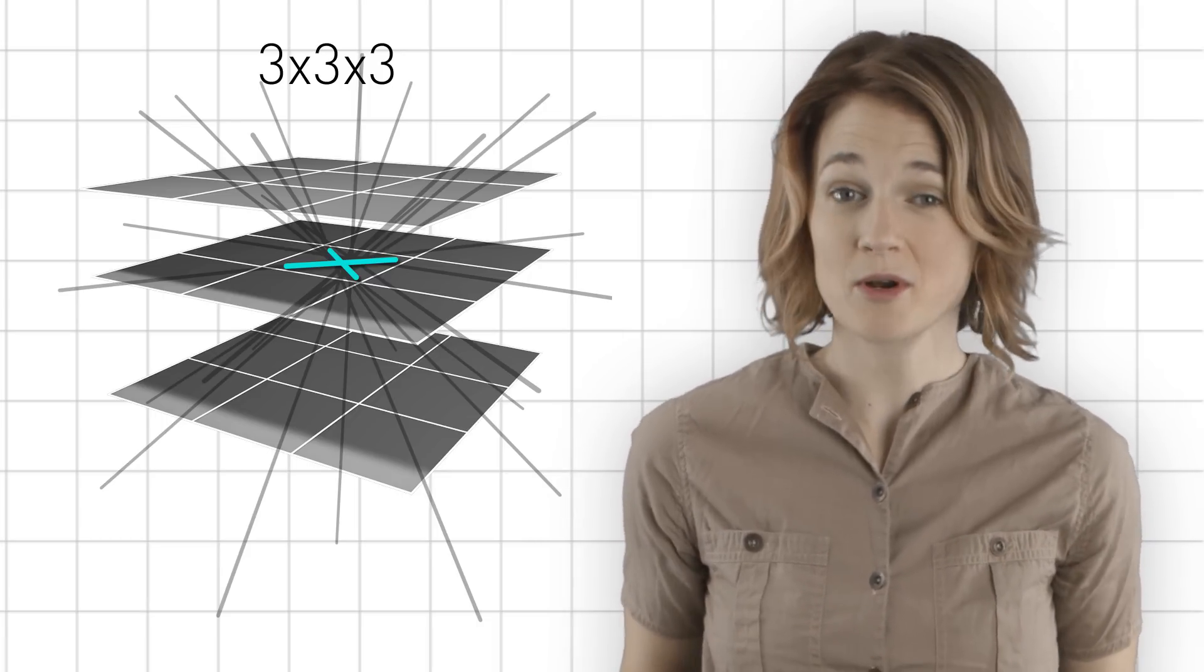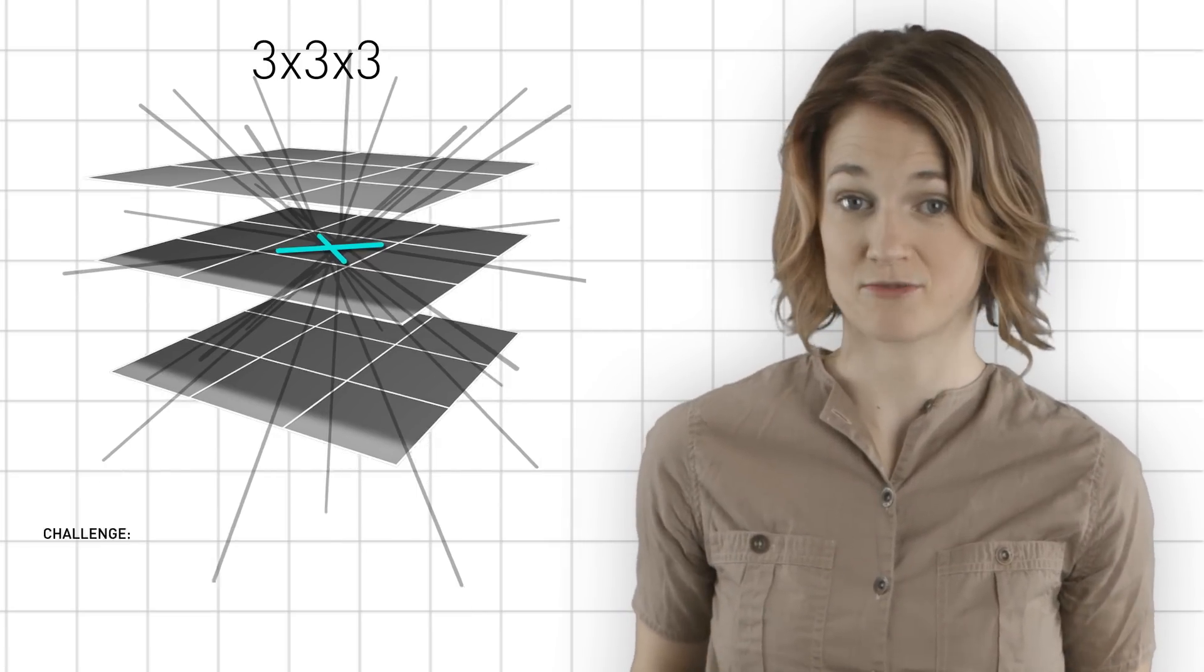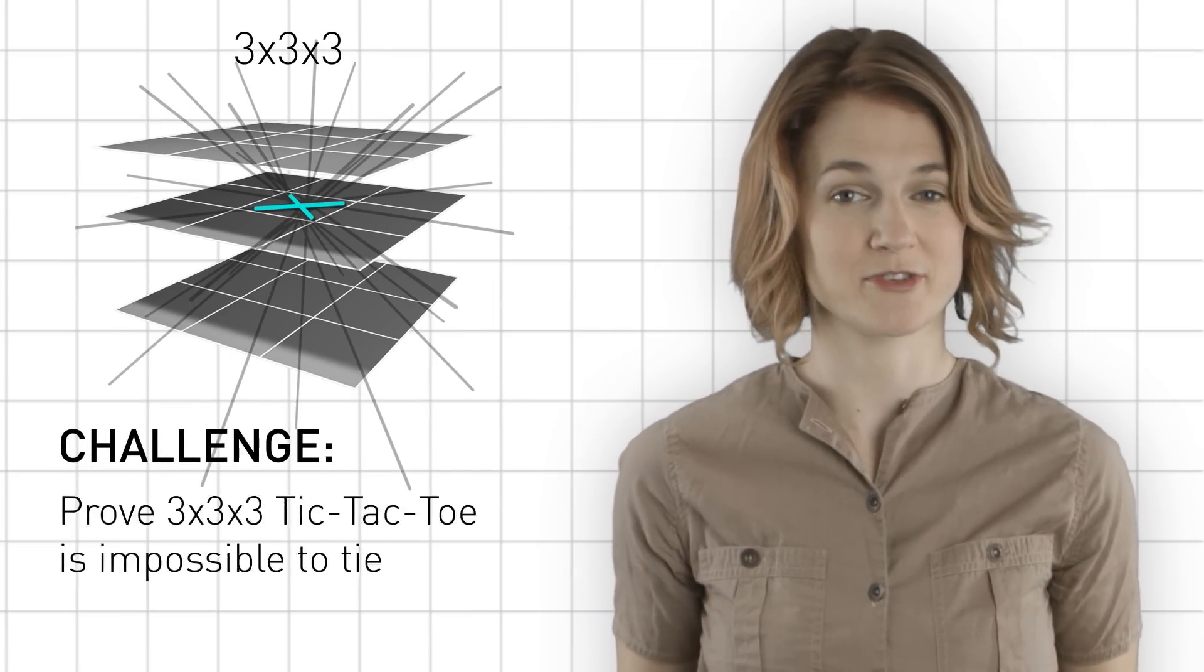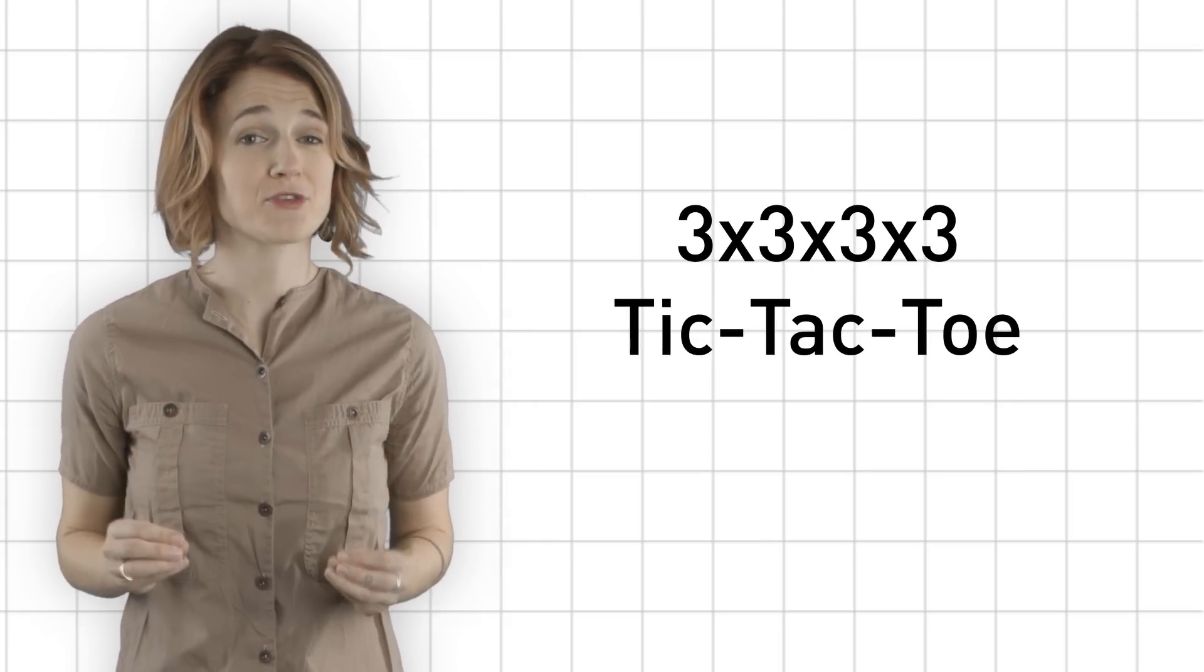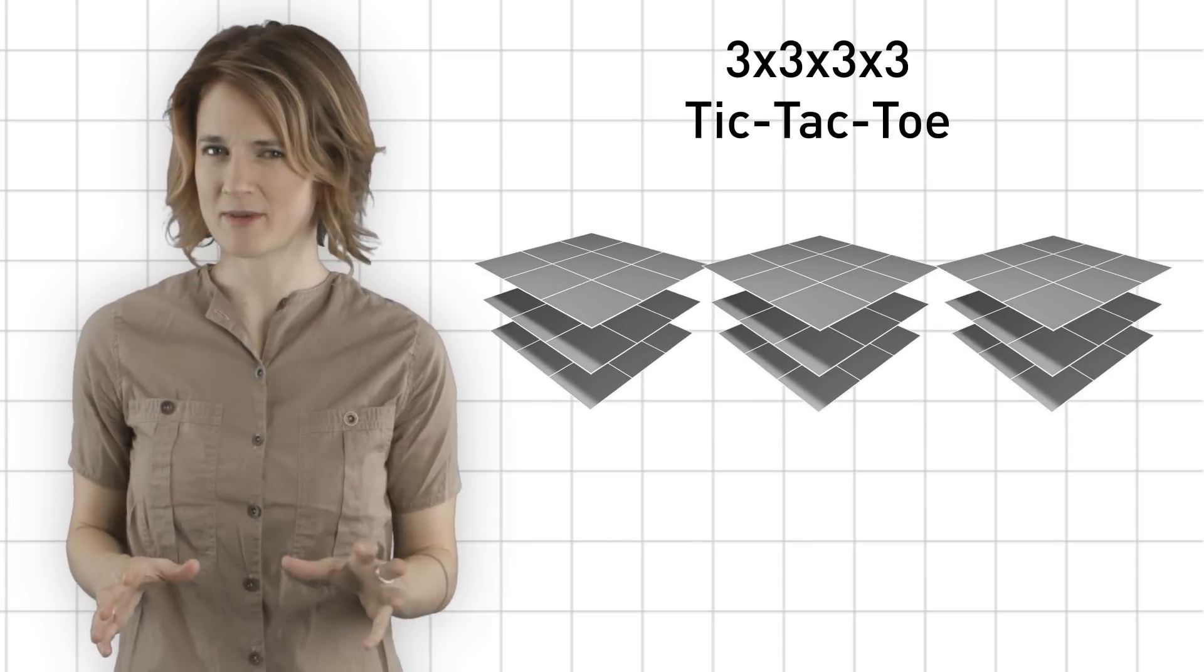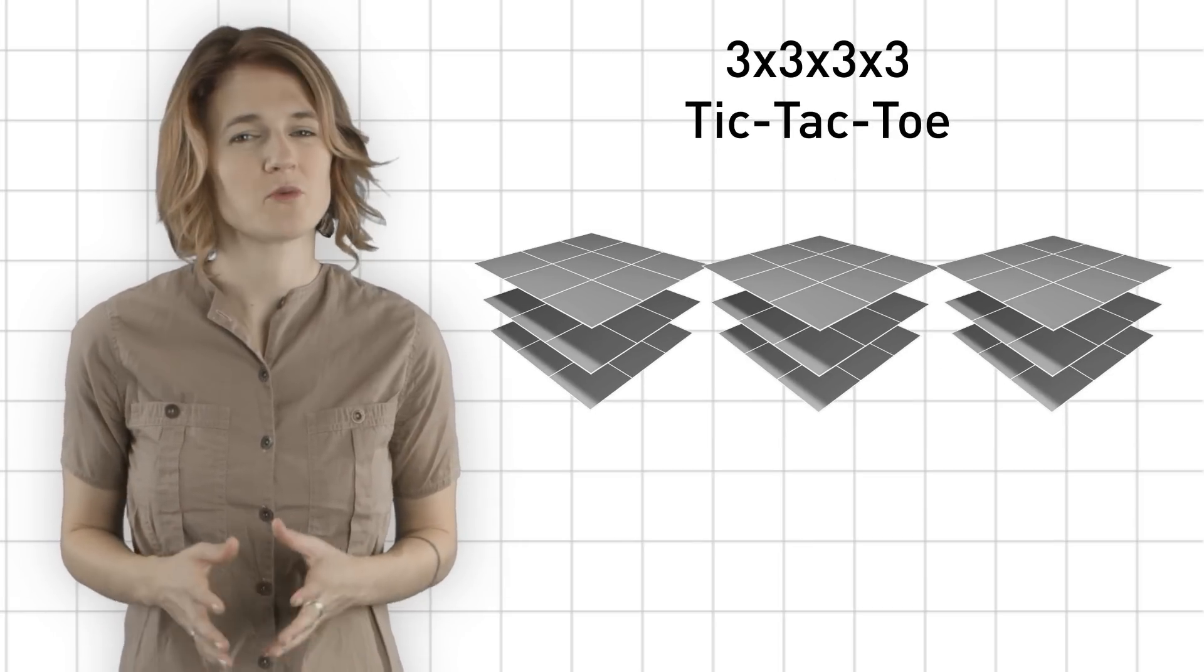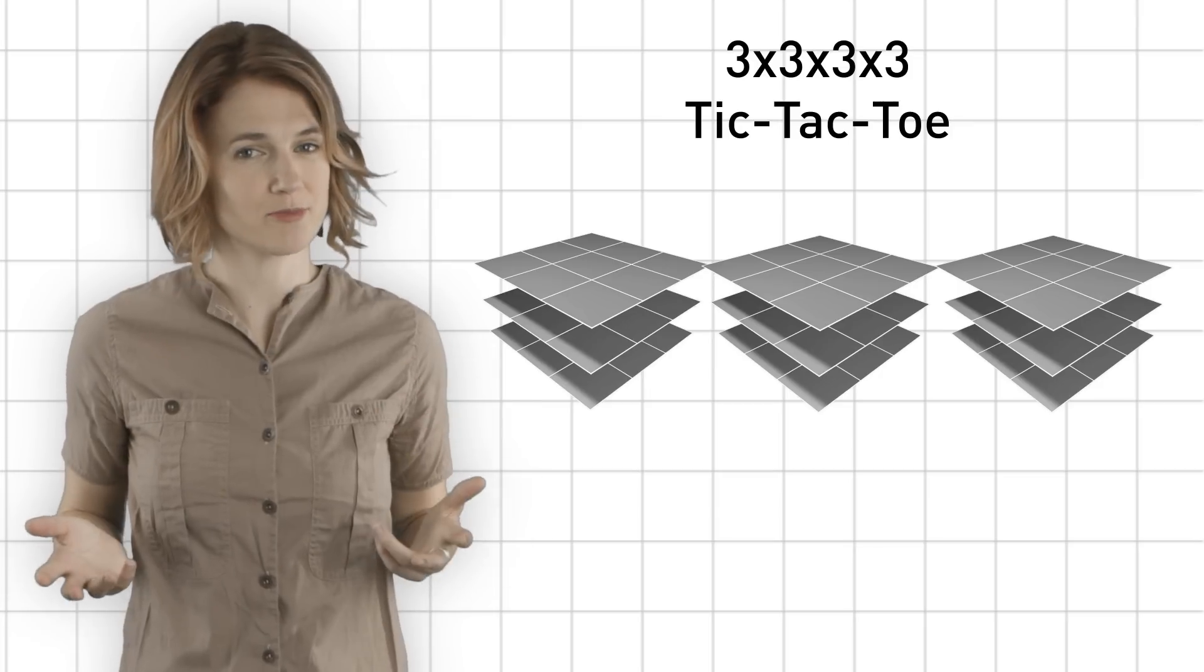Actually, even more amazingly, it's impossible to tie in 3x3x3 tic-tac-toe. And your challenge problem for the week is to prove that. Using a big stretch of the imagination, you can even play a 3x3x3x3 game with dimension 4. You just draw three copies of 3-dimensional tic-tac-toe. But what does a winning line look like on a 4-dimensional board?